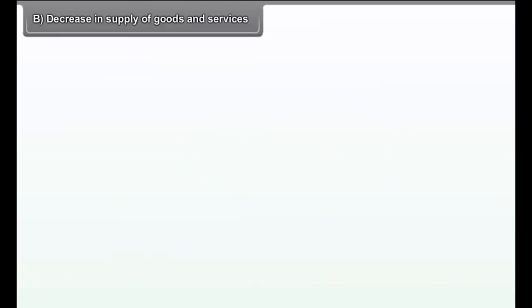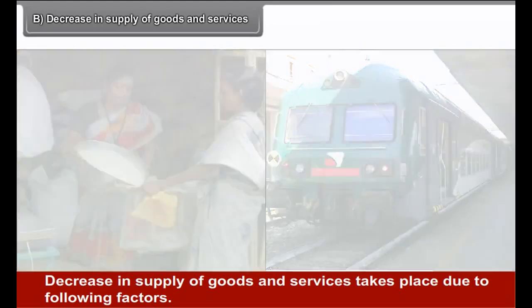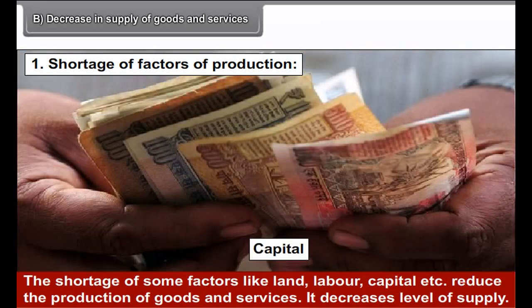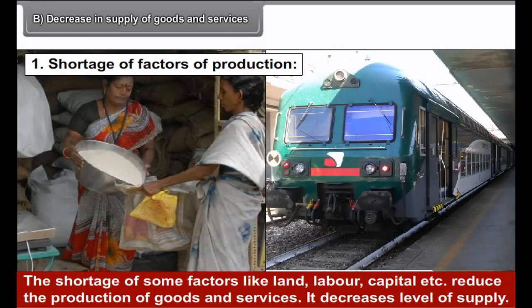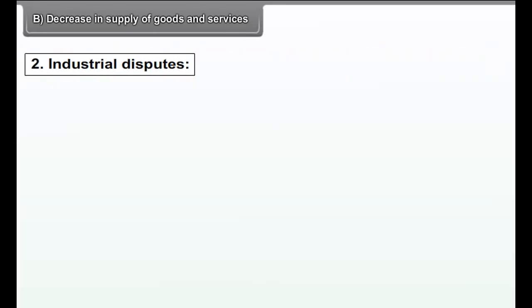Decrease in supply of goods and services. Decrease in supply takes place due to the following factors. First, shortage of factors of production. The shortage of some factors like land, labour, capital, etc., reduces the production of goods and services, decreasing the level of supply.